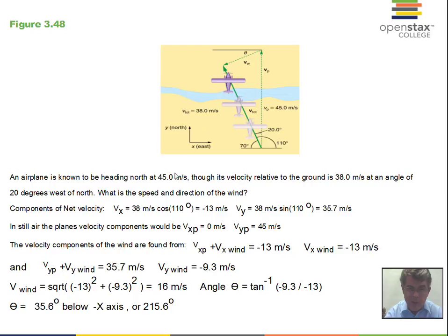How do we find the wind components and then reconstruct the wind vector? Given that the plane flies at 45 miles an hour straight north in still air, it's actually tracking at 38 meters per second at an angle of 20 degrees west of north. The actual track across the ground, 38 meters per second at 110 degrees from the positive x-axis, gives us: x component of the total velocity is -13 meters per second, y component is 35.7 meters per second.